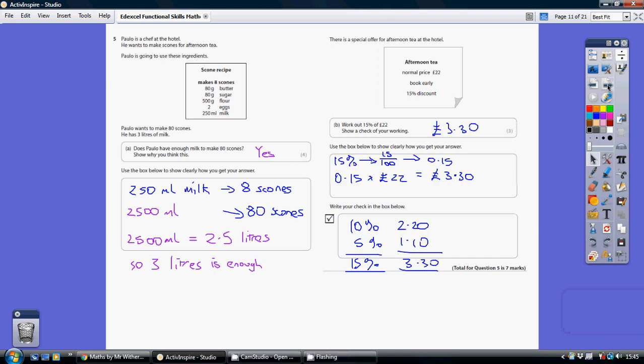Question 5. Paolo wants to make 80 scones. He has 3 litres of milk. Does he have enough milk to make 80 scones?